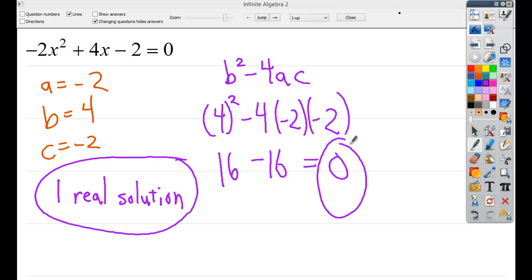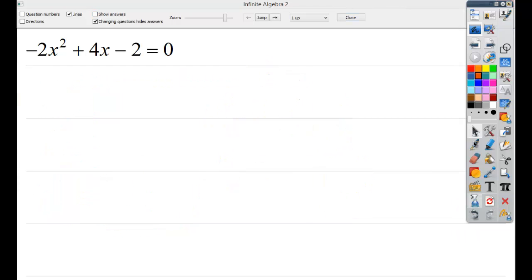Now for b squared, of course, it's 16. I always treat the minus four as negative four. So then I could do negative four times negative two times negative two, which gives me negative 16. 16 minus 16 is zero, which means I wouldn't have anything to add or subtract from the negative b, so I'll end up with one real solution. Here's my discriminant right there, zero. One real solution.